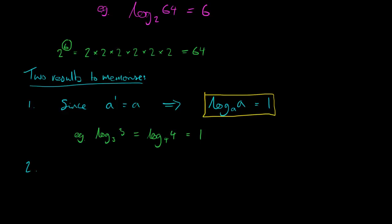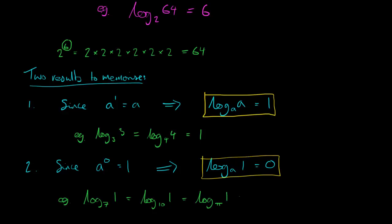And the second fact that you need to memorize and be aware of is based on the fact that anything to the power 0 equals 1. So, if you put that in log form, log to the base anything of 1 equals 0. And again, this applies whatever the value, whatever the base. It could be log to the base 7 of 1. It's the same as log to the base 10 of 1. It could even be log to the base pi. Log with any base of 1 is equal to 0.